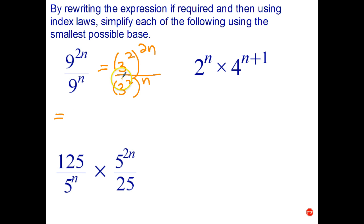So I've now got a smaller base, now let's go ahead and simplify this. Well 3 squared to the 2n is 3 to the 2 times 2n which is 4n, over 3 to the 2 times n which is 2n.